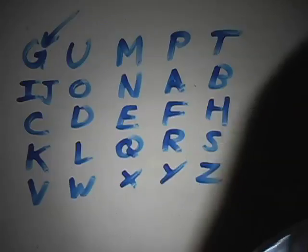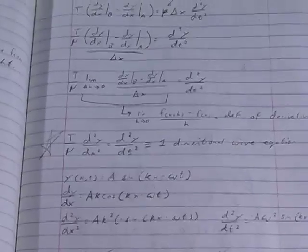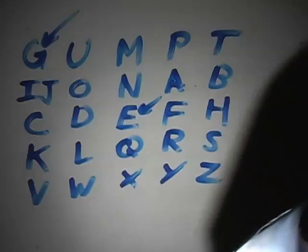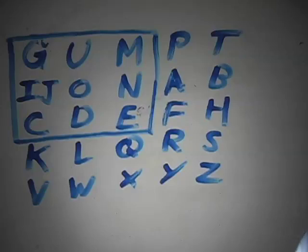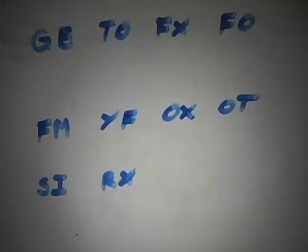Step 3: starting with G E, find G and E on the grid. More often than not, the letters will appear as corners on a rectangle or square. To encrypt, we take the other two corners, assigning the cipher letter to the plain text letter on the same line. f(GE) = MC.